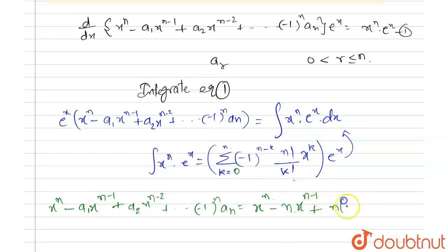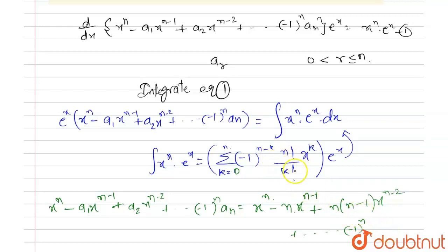Continuing the pattern, it goes up to n·(n−1)·x^(n−2), and further terms follow similarly. The last term, when k = 0, is (−1)^n · n!/0! · x^0. Since 0! = 1 and x^0 = 1, the last term is (−1)^n · n!.